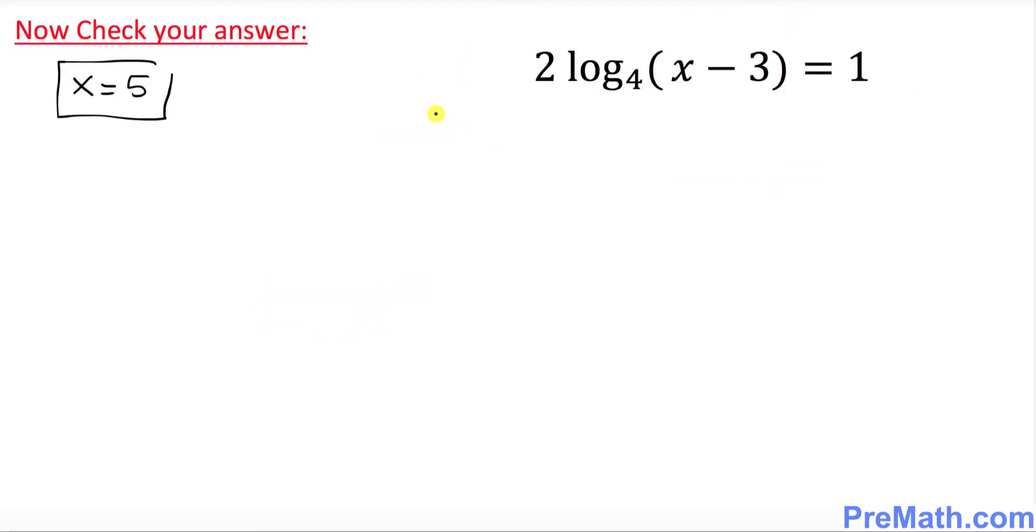And now finally we want to check our answer for any extraneous solution. So our solution was x equal to 5. Let's go ahead and plug it in in our original equation. So 2 times log with a base 4 equals to 1. So 2 log of 5 minus 3 is 2 with a base 4 equals to 1.